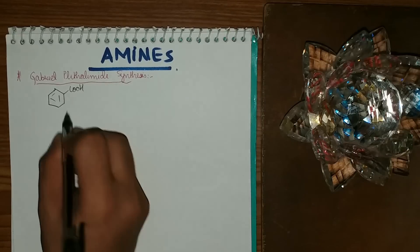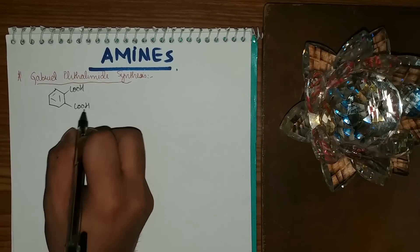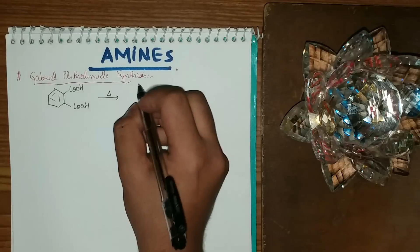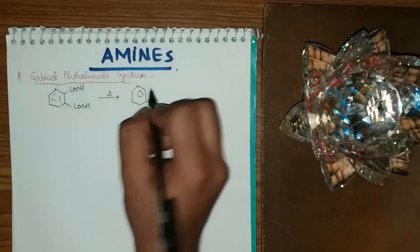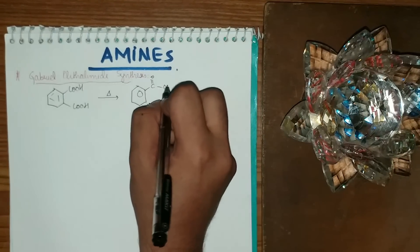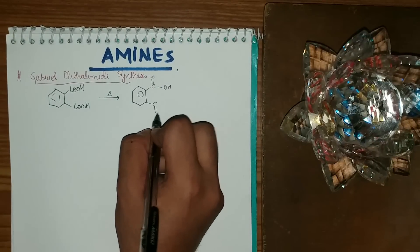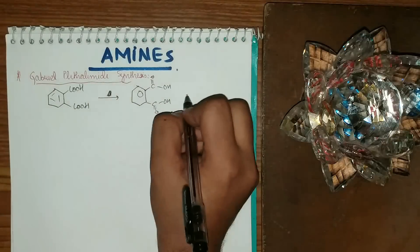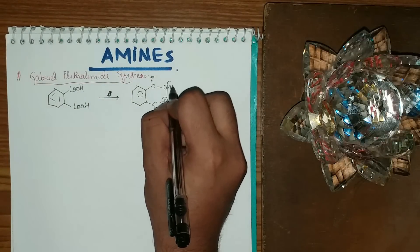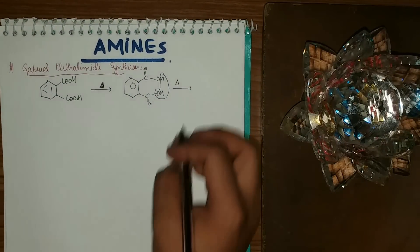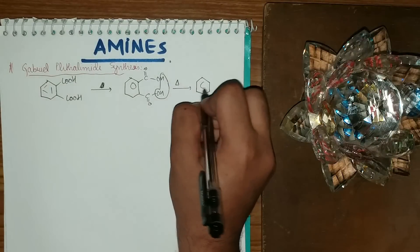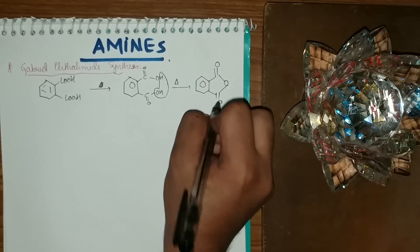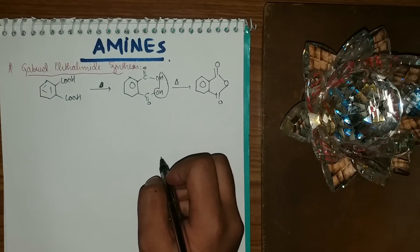If I take phthalic acid with structure COH-COH and heat it, I'll be removing H2O because of heat, getting the product benzene with a CO double bond O — that is phthalic anhydride.